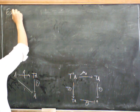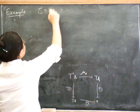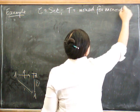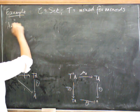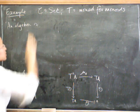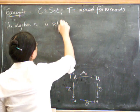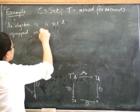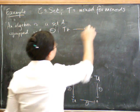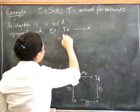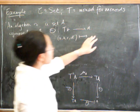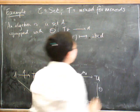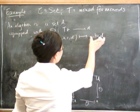In the example where C equals Set and T equals the monad for monoids, an algebra is first of all an object in the category — so it's a set A — equipped with theta, which goes from T of A to A. Remember, the objects in T of A are words. So if we've got some word A, B, C, D, for example, theta maps it to some element, which we regard as the result of multiplying all these things in a row: A·B·C·D. That's just notation saying this is the result of multiplying all these things in a row.